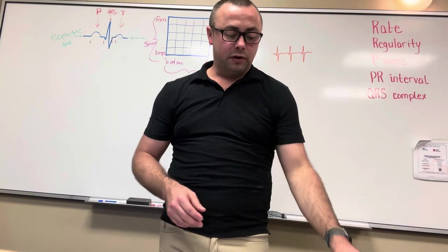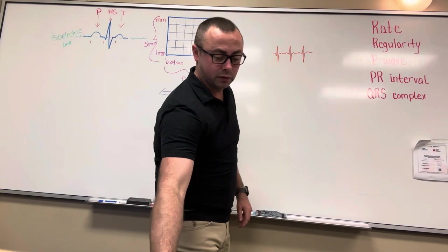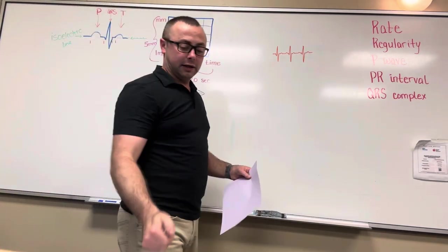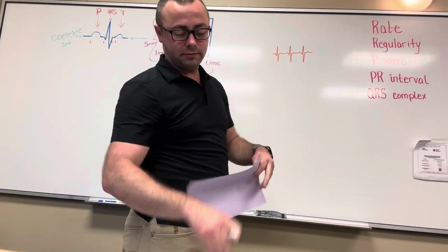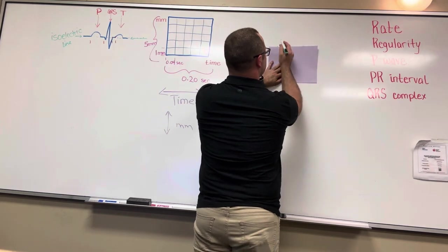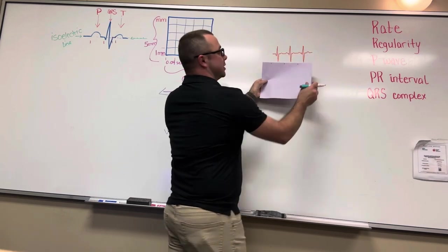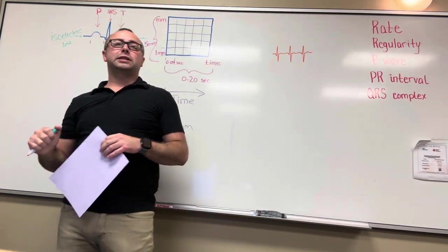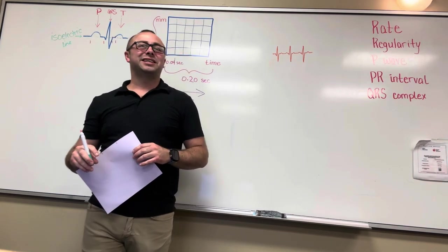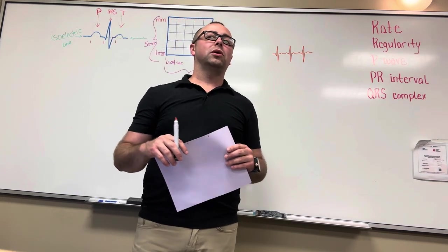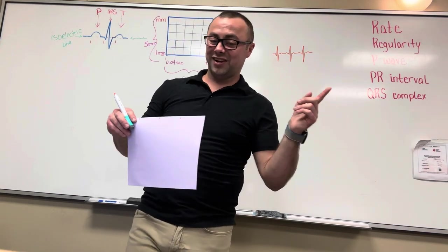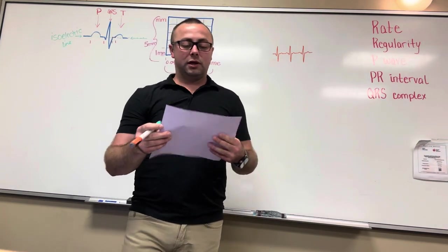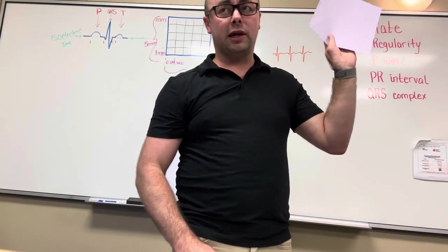When we talk about rate, one of the simplest ways is to count R waves. Counting those R points: you put your paper over the strip, mark each R — there's an R, there's an R, there's an R. You count how many R's you've got. You've got six R waves in a six-second strip — your rate's going to be 60. Is that normal? Yes. So we know the SA node is firing. A normal heart rate for an adult is 60 to 100.